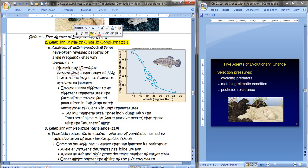Now another way that we see organisms going through selection is selection to match climatic conditions. This is kind of interesting. When we look at analyses of enzyme encoding genes, it's often revealed a pattern of allele frequency that vary latitudinally. Now, when we're talking about latitude, we're talking about temperature, right? The farther north you go in latitude, the colder it gets. When we look at fish called the mummy chog, which are along the east coast of North America, they have an enzyme called lactate dehydrogenase, which is responsible for converting pyruvate to lactate.